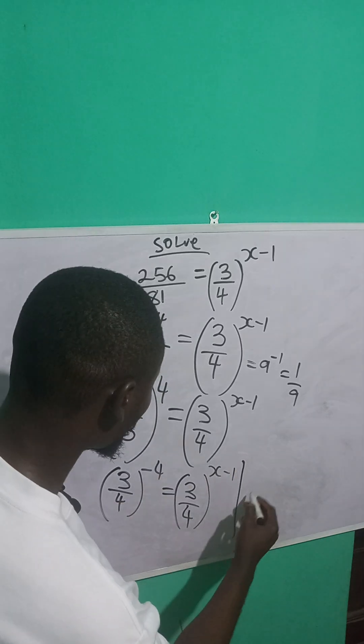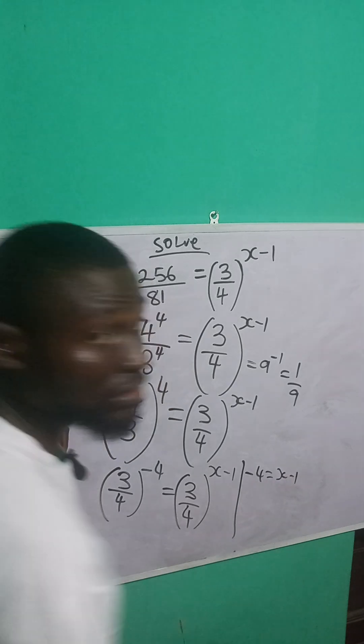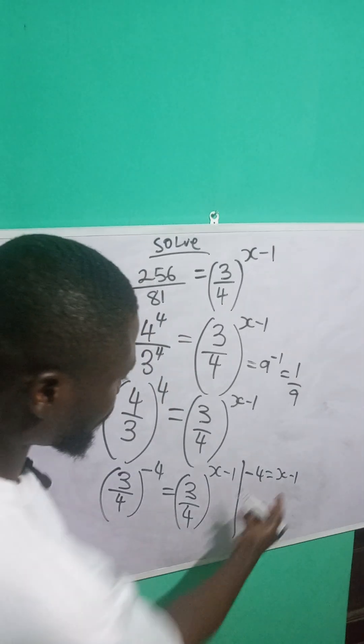So I will equate the powers. So this is what? Minus 4 is equal to x minus 1.